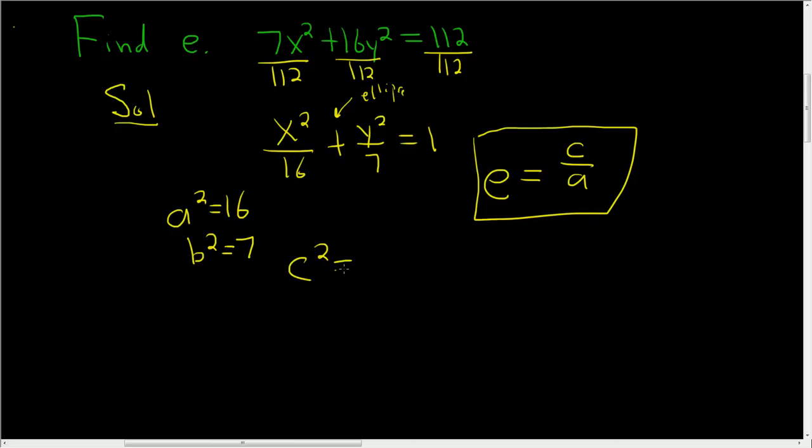It's c squared equals a squared, and it's always the opposite. So if you have a plus here, you put a minus. If you had a minus here, it would be a hyperbola. Then you would put a plus here.